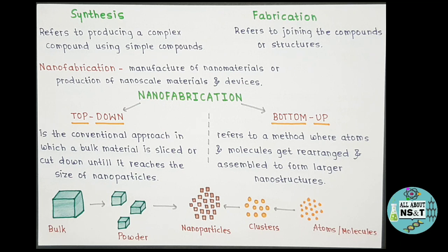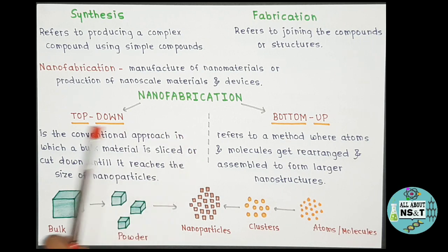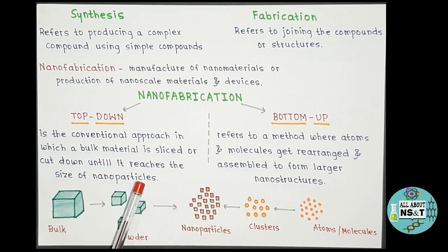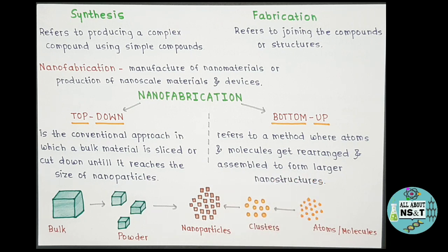Basically, nanofabrication methods can be classified into two groups: top-down and bottom-up approaches. The top-down approach is the conventional approach in which a bulk material is sliced or cut down until it reaches the size of nanoparticles. The bottom-up approach refers to a method where atoms and molecules get rearranged and assembled to form larger nanostructures.